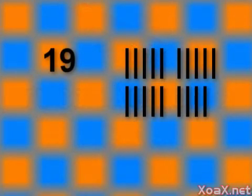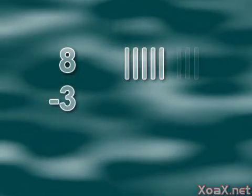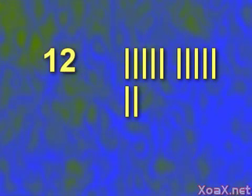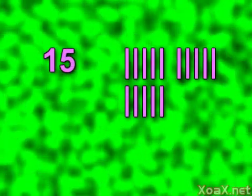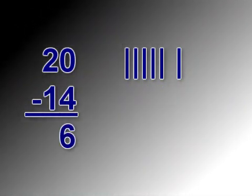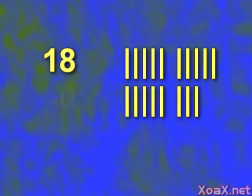Subtraction. 19 minus 2 equals 17. 8 minus 3 equals 5. 12 minus 6 equals 6. 15 minus 10 equals 5. 20 minus 14 equals 6. 2 minus 1 equals 1. 16 minus 7 equals 9. 18 minus 0 equals 18.